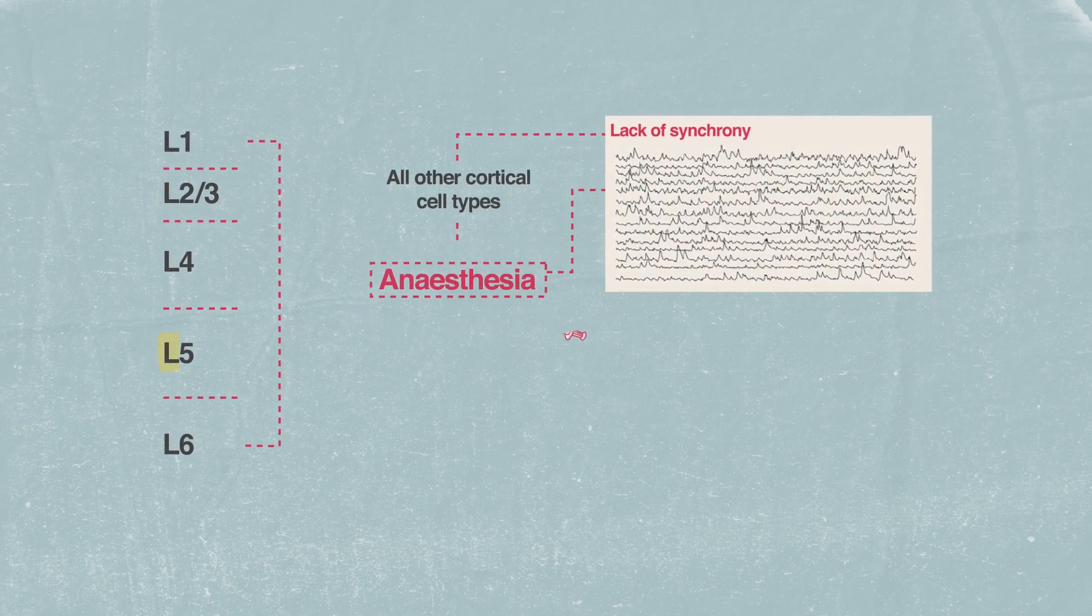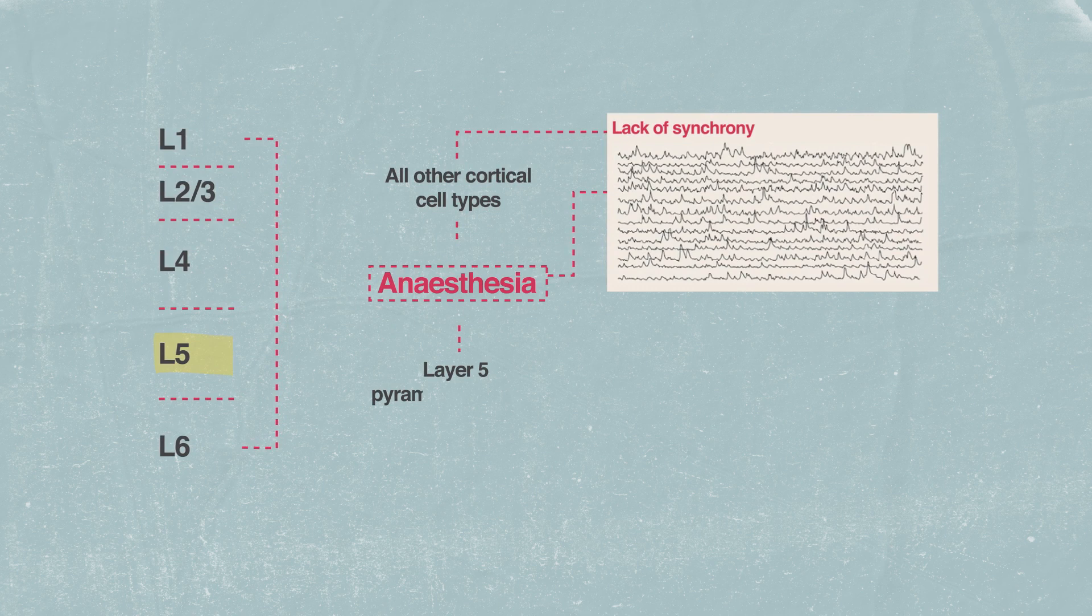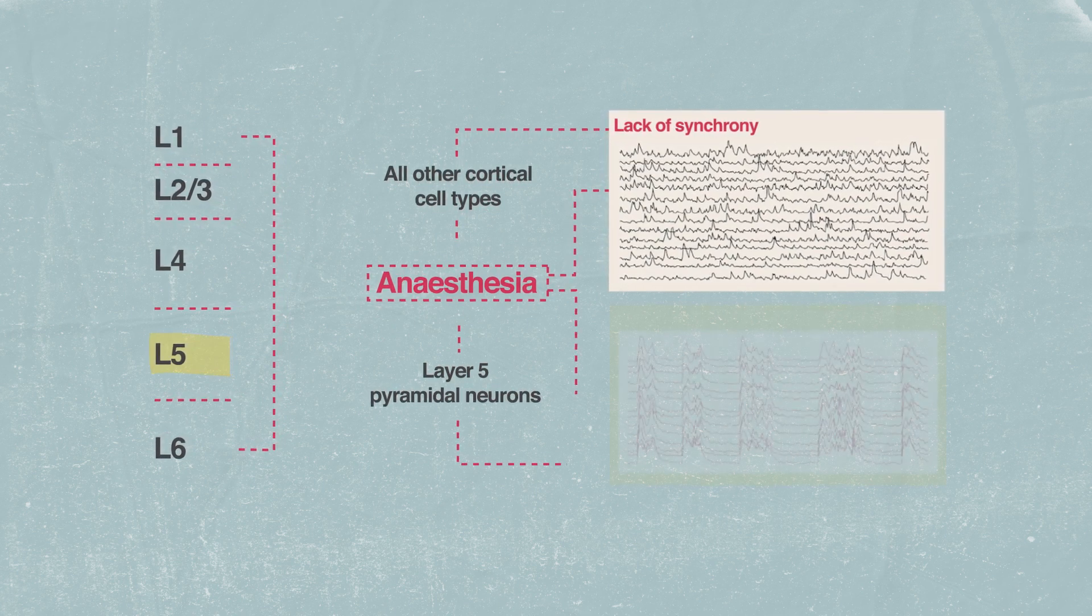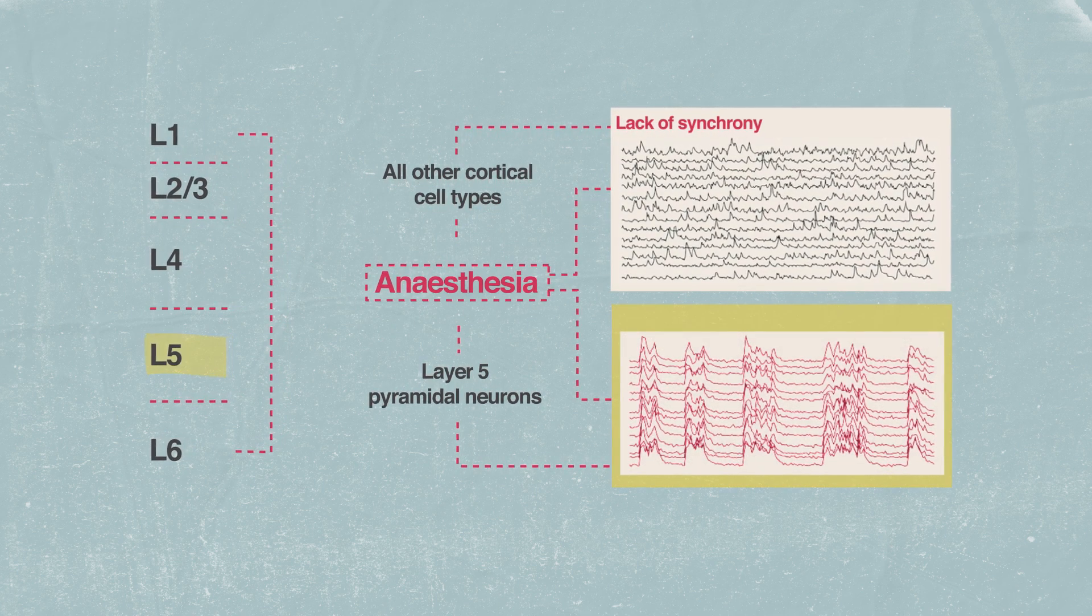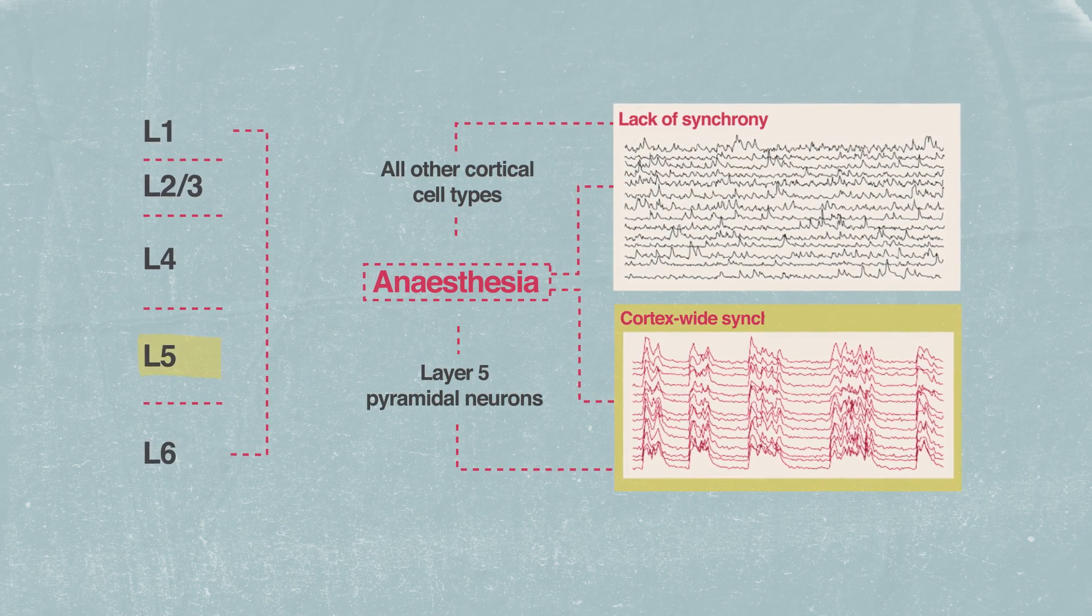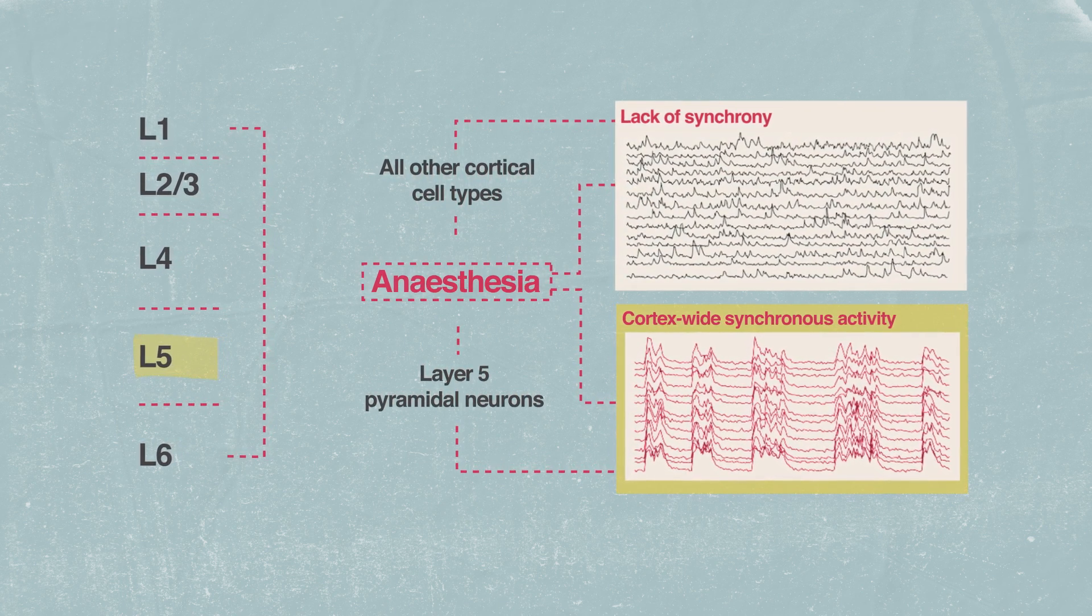However, in one specific type, layer 5 pyramidal neurons, different general anesthetics converged on a common feature: synchronized activity in time across all neurons of this type.